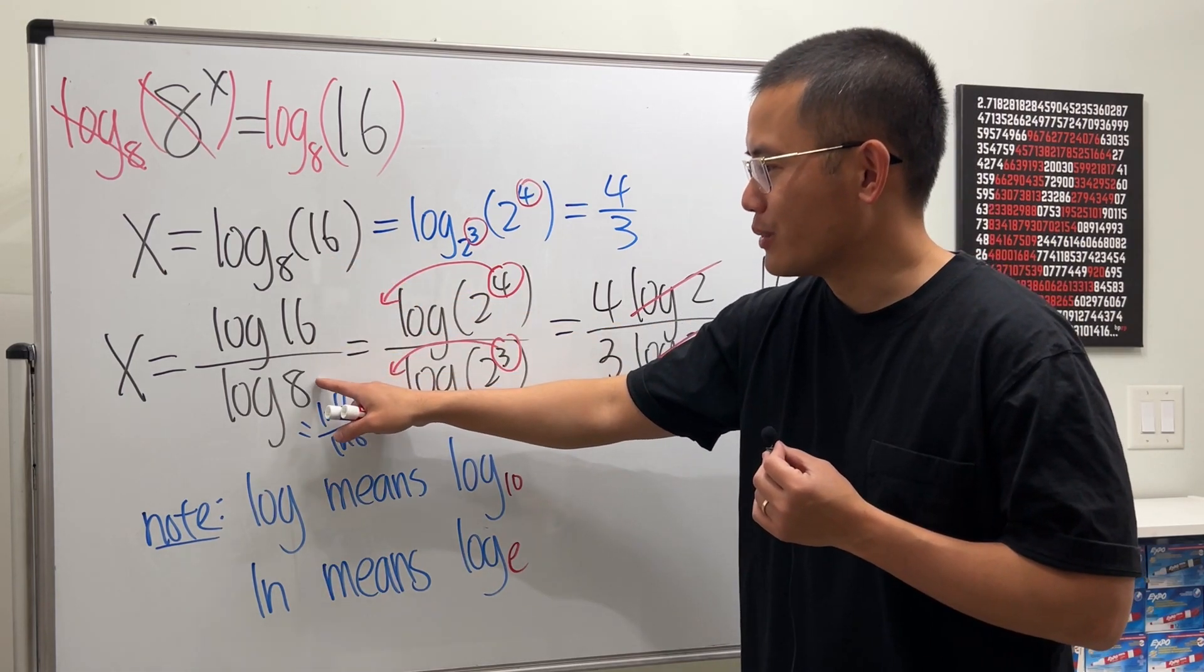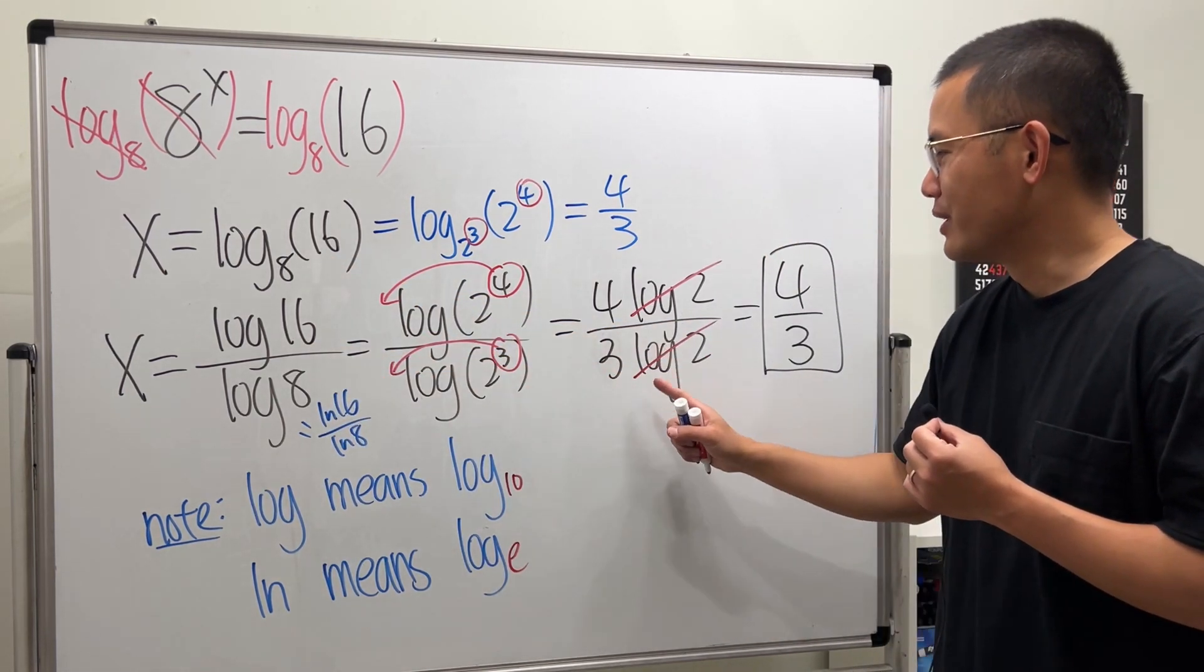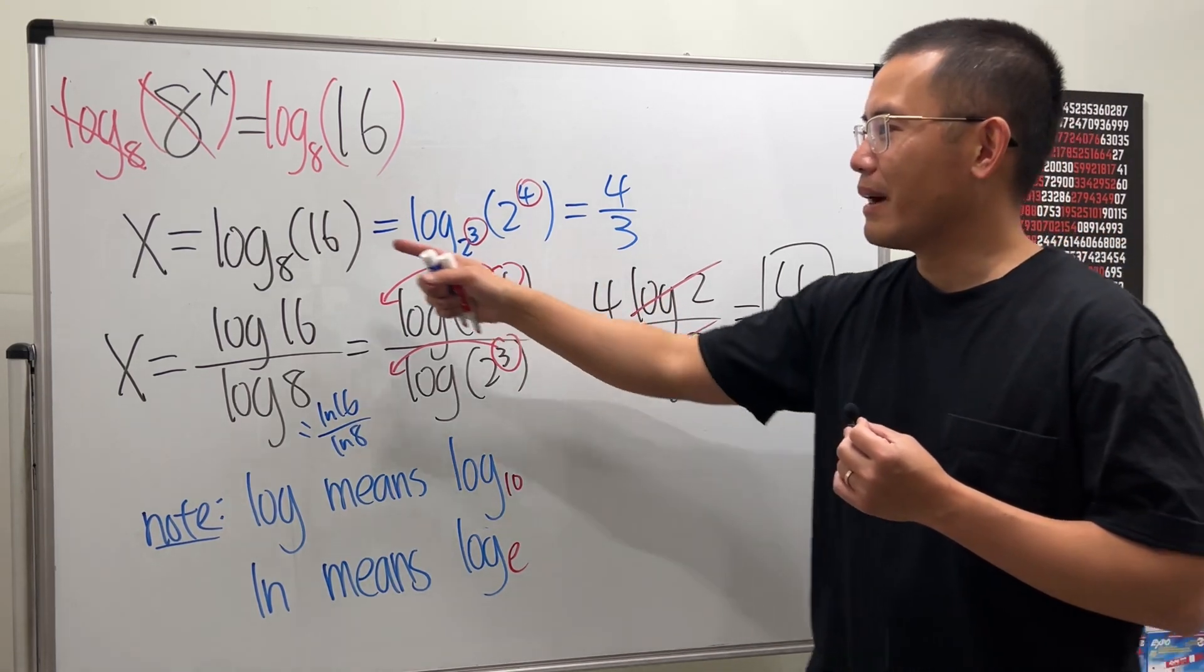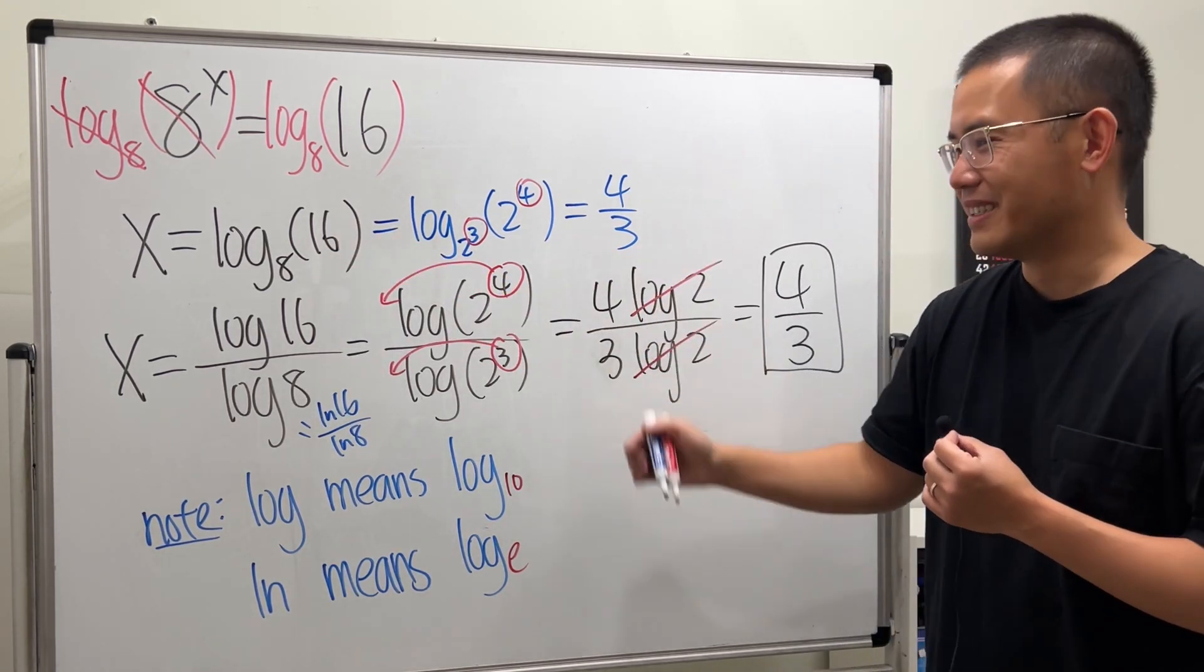Why does this work? Because you can use the change of base formula to get this, to get this, to get this, to get that. So, it's pretty much the same thing, but this right here, it's actually much faster. Okay, now I'm done.